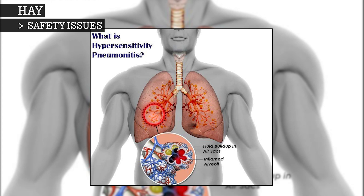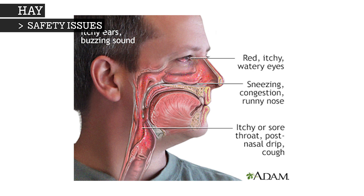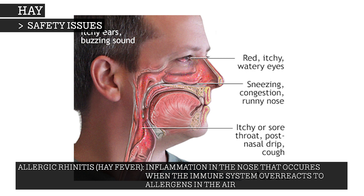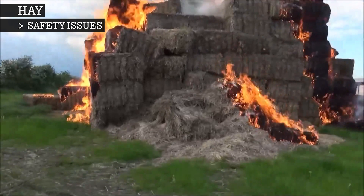Farmer's lung is induced by the inhalation of biologic dusts coming from hay dust, mould spores, or other agricultural products. Exposure to hay can also trigger allergic rhinitis, known commonly as hay fever, which affects people who are hypersensitive to airborne allergens. Hay baled before it is fully dry can produce enough heat to start a spontaneous fire. This heat comes from the bacterial fermentation of the wet grass.